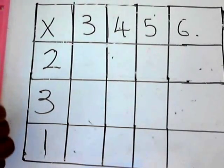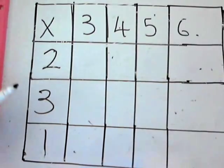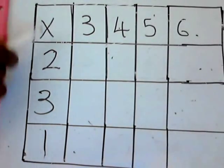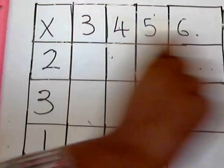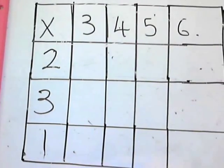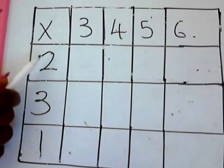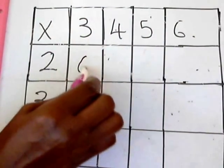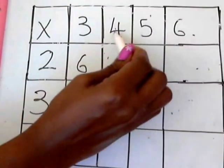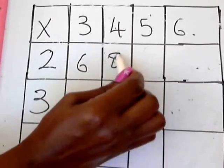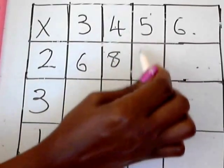The idea is you are expected to multiply this column by this row. So let's start from this 2. Let's go: 2 times 3 gives us 6, 2 times 4 gives us 8, 2 times 5 gives us 10.